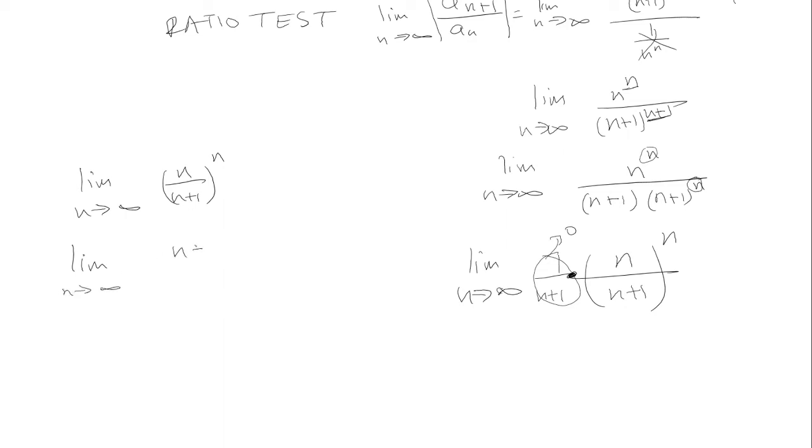We can make n in terms of n plus 1 minus 1. Because the 1's cancel. And then I can break it up into two fractions. It will be n plus 1 over n plus 1, minus 1 over n plus 1, all raised to the nth power. And this just becomes 1.